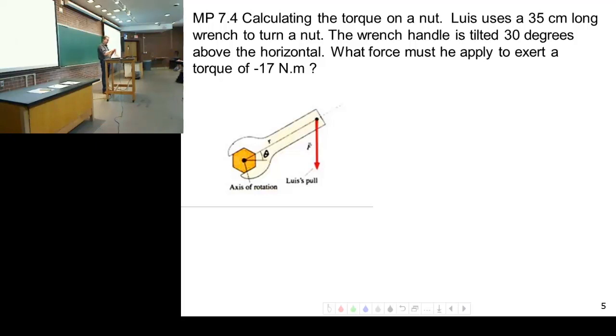Now here's the problem. MP stands for mastering physics. So if you look at the videos online, there'll be MP whatever. That's actually mastering physics questions. So calculating the torque on a nut. Lewis uses a 35 centimeter long wrench to turn a nut. The wrench handle is tilted 30 degrees above the horizontal. What force must he apply to exert a torque of negative 17 newton meters? Again, the minus sign is kind of irrelevant to us in this problem.